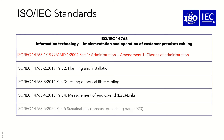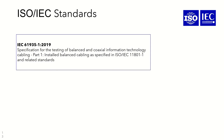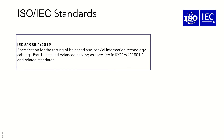Part 5 of ISO/IEC 14763 has not been released yet — it addresses the sustainability of cabling infrastructure and is due to be released in 2023. Another standard worth mentioning is IEC 61935, developed by IEC, which covers the testing of balanced twisted-pair and coaxial cables in relation to the ISO/IEC 11801 standard.